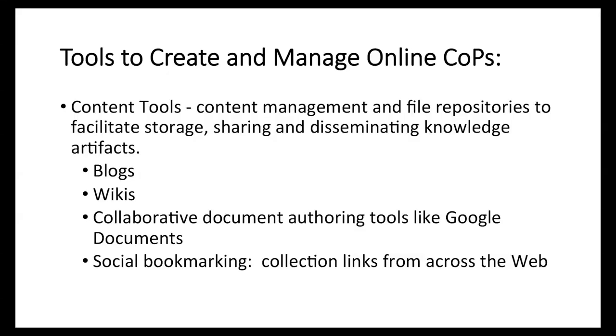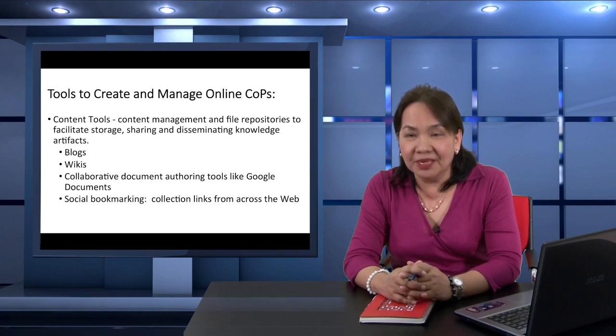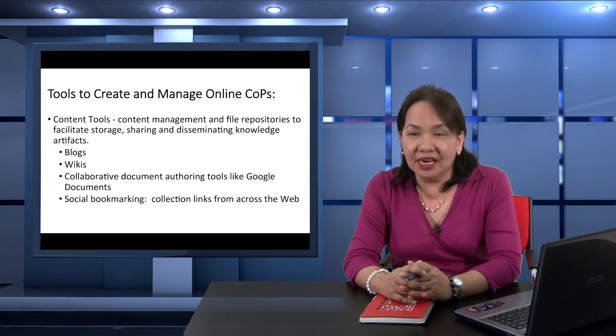What are the technology tools to create and manage the online community of practice? The tools can be classified into two categories: content tools and member interaction tools. For content tools, we have content management and file repositories to facilitate storage, sharing, and disseminating knowledge artifacts. Examples are blogs — blogs are a great tool for facilitating discussions when users wish to do more than just ask and answer questions. Blogs allow one user to post a brief or extended idea or opinion and invite others to comment. There are also micro-blogs, which are functionally equivalent to status updates. This emerged from the desire to take the anyone-can-publish ethos of blogs and apply it to short thoughts, quick observations, and shared links with minimal explanation. Twitter is the best known example, with its famous 140-character constraint.